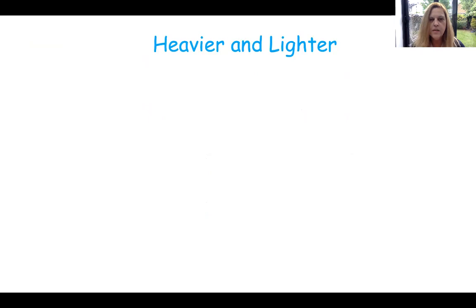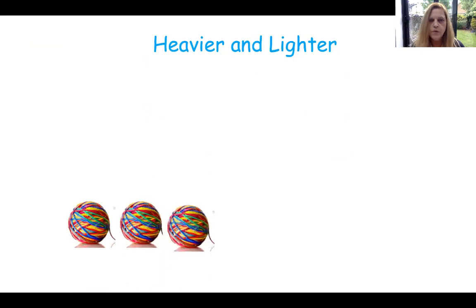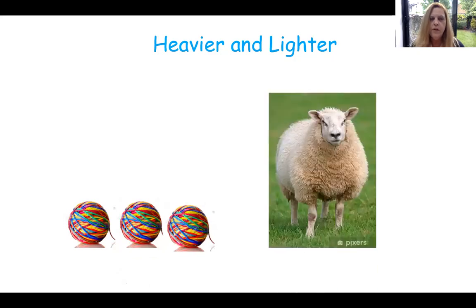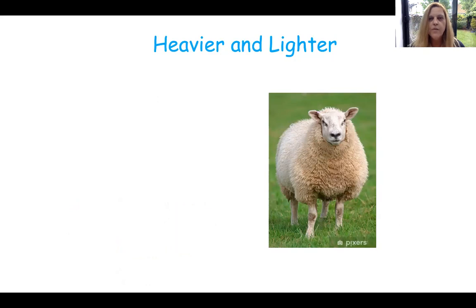Now we've got some things that are heavier and lighter. Let's see. We've got one ball of wool, two balls of wool, three balls of wool. So three balls of wool and a big sheep. Because wool comes from a sheep. I think this one's quite easy. Which do you think is heavier? If you had to lift them up, which one would be harder to lift up? Three balls of wool or one big woolly sheep? I think it might be the sheep. I think he'd be really difficult to lift up. So the sheep is heavier and the wool is lighter.